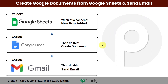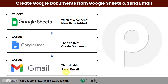Let's say that I am an international school and here I have organized an essay competition. I want that every time a new entry is submitted online, then automatically the details must be added in my Google Sheet. From this Google Sheet, I want to create a document with a template, and then finally send an email to the person who has just submitted the entry, giving them a confirmation about the entry submitted.